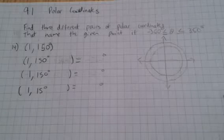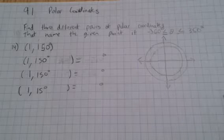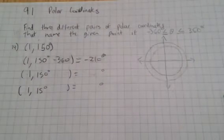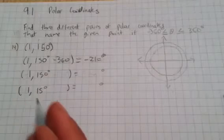The point it gives us is 1, 150 degrees, and so one way to do this is to subtract 360. So minus 360, and that will give us negative 210 degrees, and that's another pair of coordinates that matches.